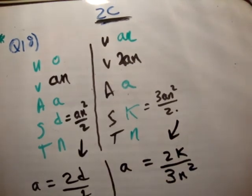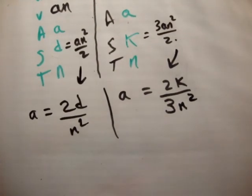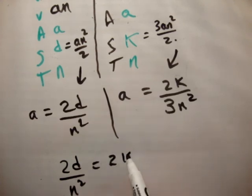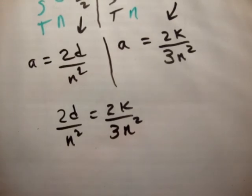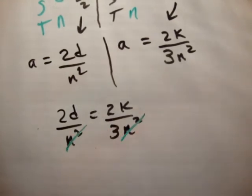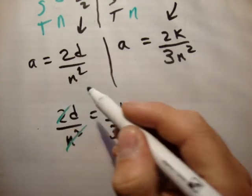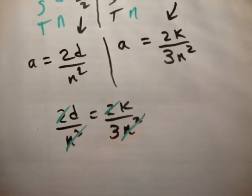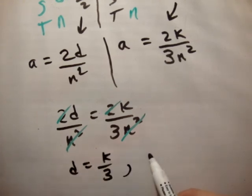So, a and a. Sorry, you couldn't see that. So, we go 2d over n squared is equal to 2k over 3n squared. What can we do? We can cancel the n squared and the 2s. So, we get d is equal to k over 3, or 3d is equal to k.